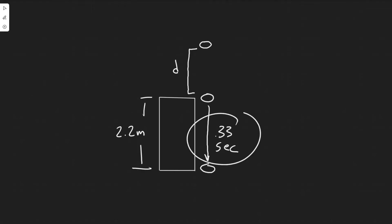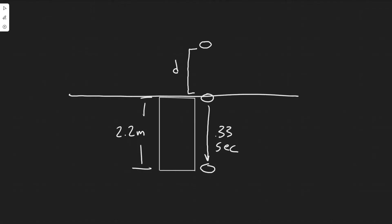The time it takes to travel past the window is 0.33 seconds. We're going to be solving for this distance D, and the way we're going to do that is by splitting this problem into basically two kinematic problems. We're going to have kinematic variables for each one.